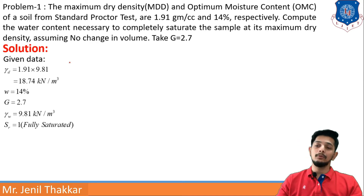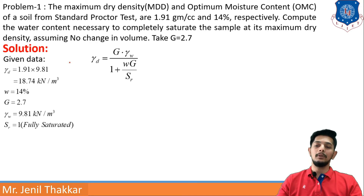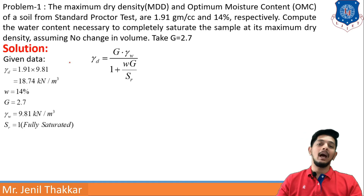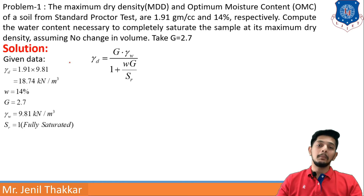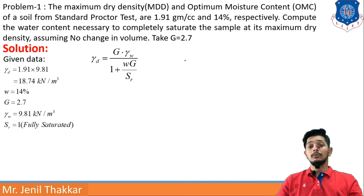I will use the formula: γd = G·γw / (1 + wG/Sr). This formula can be recalled from the chapter on index properties, relationships, and tests.